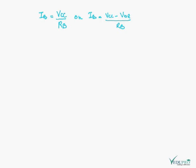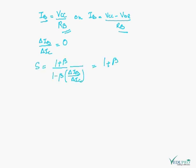In fixed bias, IB is equal to VCC upon RB, and if VBE is considered, then it is VCC minus VBE upon RB. So delta IB upon delta IC is 0 here because IB is having no relation with IC in fixed bias. So the stability factor will be 1 plus beta. Here, putting the value of delta IB upon delta IC, that is 0, I will get stability factor of fixed bias is 1 plus beta.